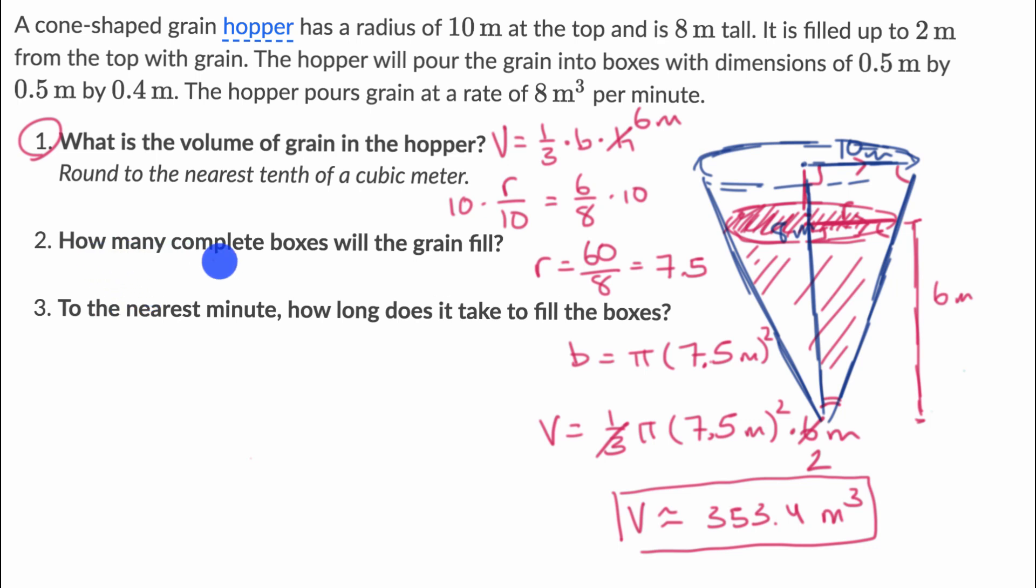And then they say, how many complete boxes will the grain fill? Well, they talk about the boxes right over here. The hopper will pour the grain into boxes with dimensions of 0.5 meters by 0.5 meters by 0.4 meters. So we can imagine these boxes. They look like this.